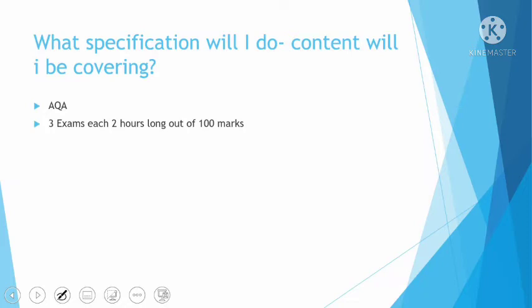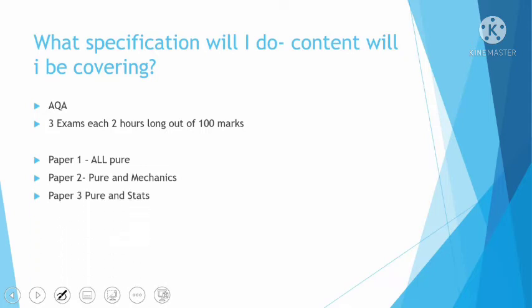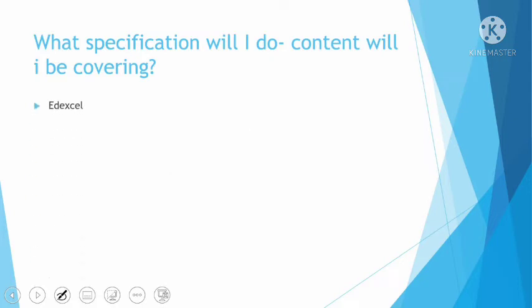For those doing AQA, you've got three exams, each two hours long and worth 100 marks, giving 300 marks in total. Paper one is all pure. Paper two is pure and mechanics. Paper three is pure and statistics.